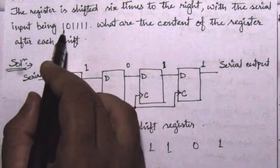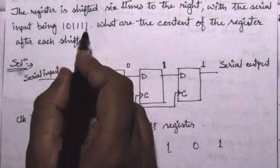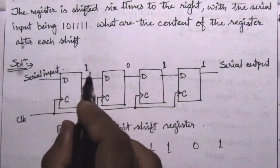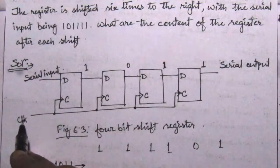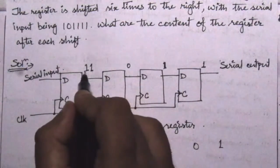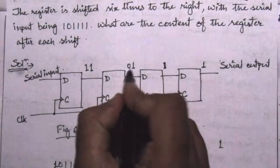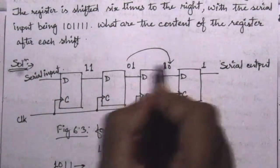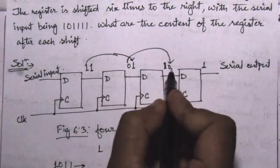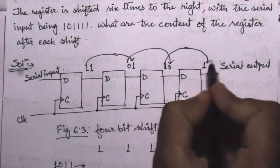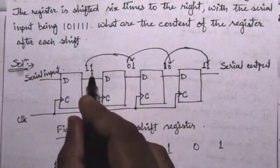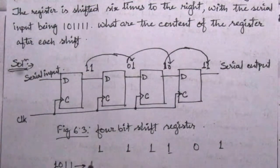After the first bit enters, since it is a D flip-flop it gives the same output. Each bit shifts one position to the right. The first serial input is 1, so after the first clock cycle the content of the register will be 1101.